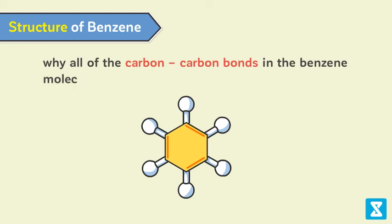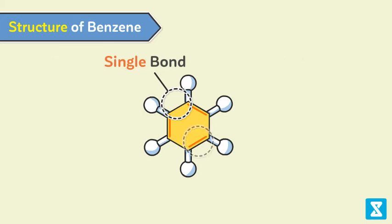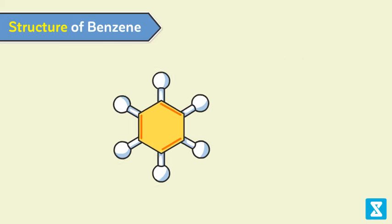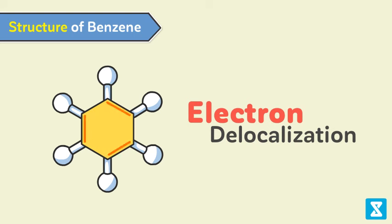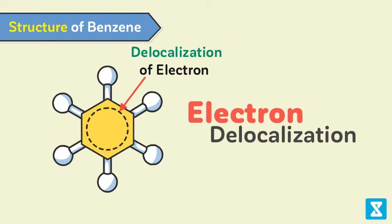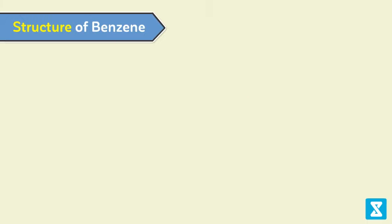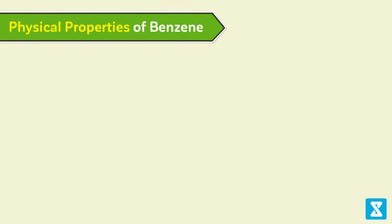The equal bond lengths in the benzene molecule, despite the presence of single and double bonds in the structure, are explained by electron delocalization. That is the reason the structural formula of benzene is represented by a hexagon with a circle in the center, which represents the delocalized electrons.